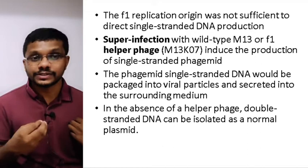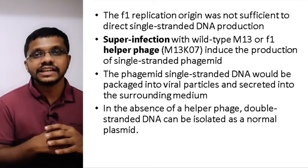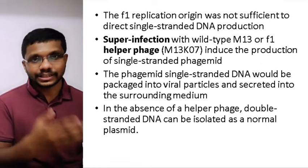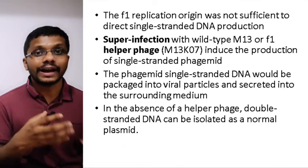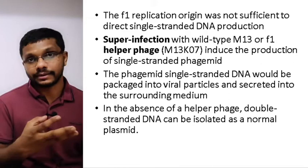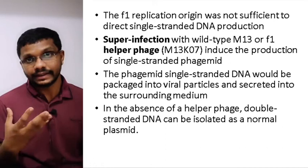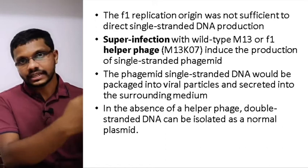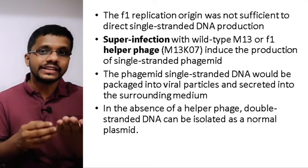To address this, we introduce a helper phage. The helper phage is essentially an M13 phage which can produce all the proteins essential for the replication of the phagemid, as well as the capsid proteins for the phagemid. However, it does not have the ability to be incorporated into the mature DNA of the M13. The helper phage provides proteins for DNA replication and capsid production, but is not itself inserted into the phage particles.